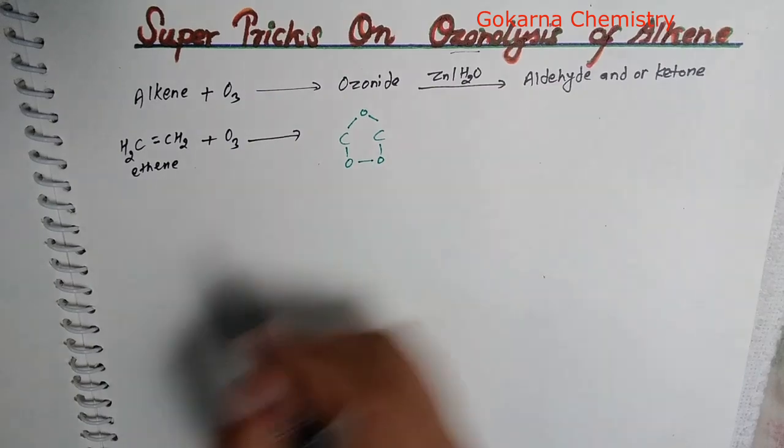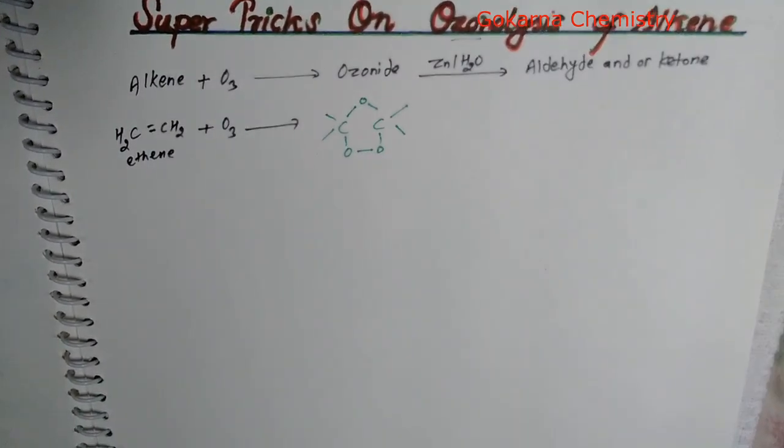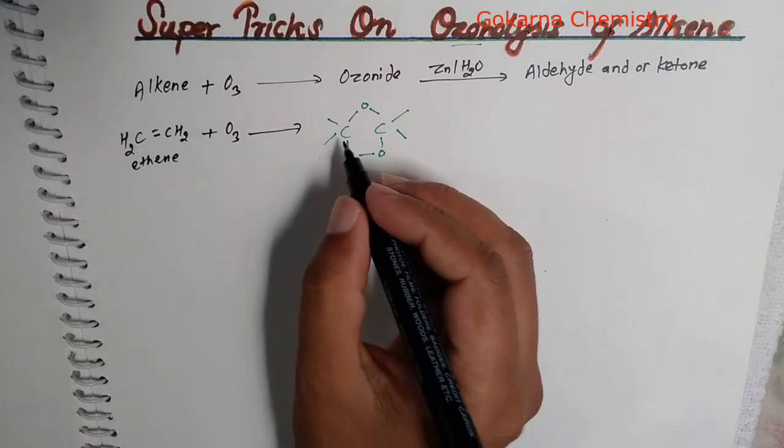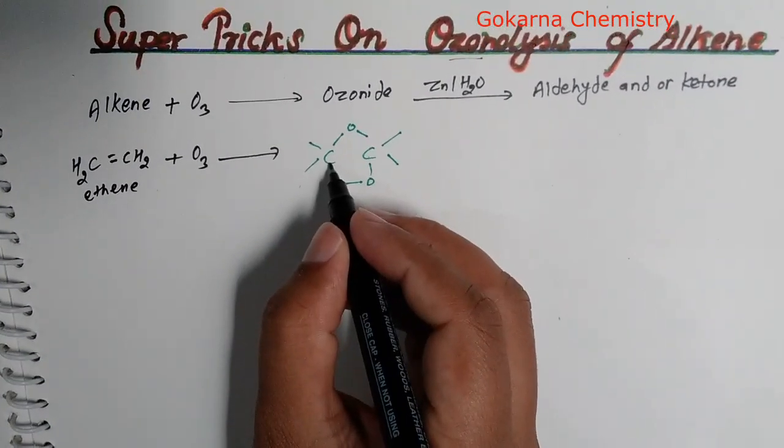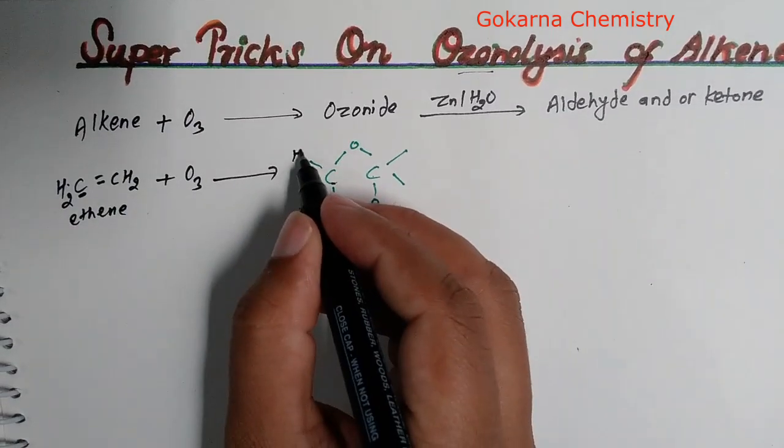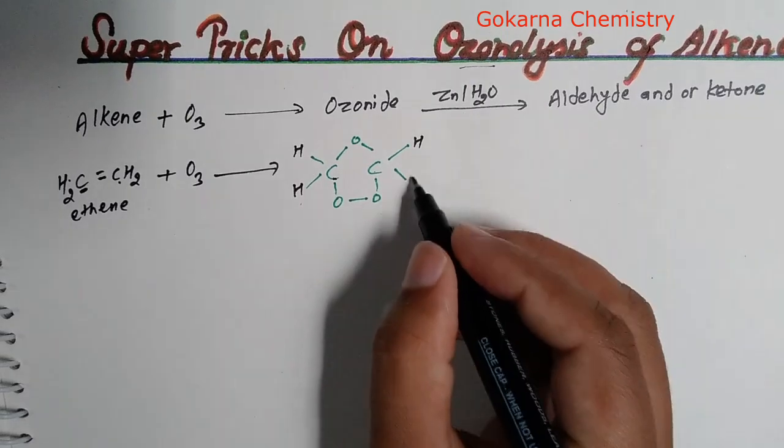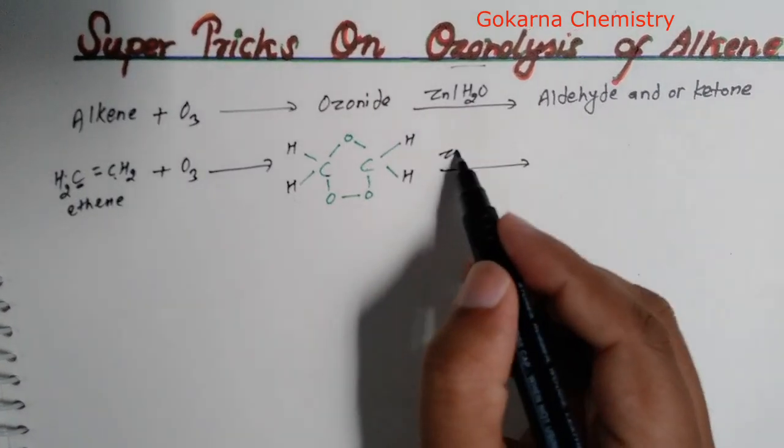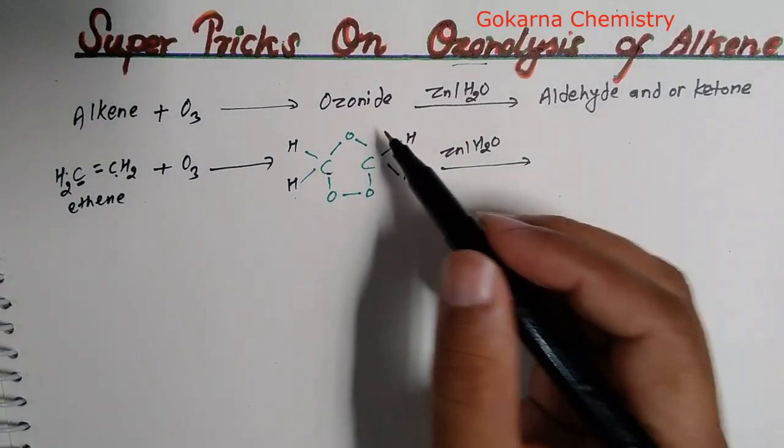With three oxygen atoms, we can see this structure is the ozonide. This carbon is double bonded carbon. Two sides have hydrogen on each side. Now we have zinc hydrolysis, which gives aldehyde formation.